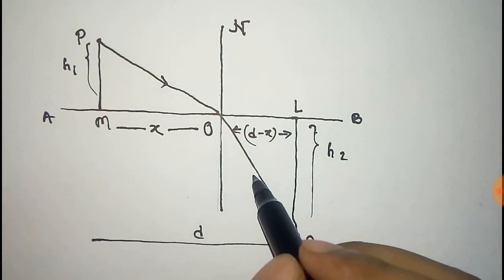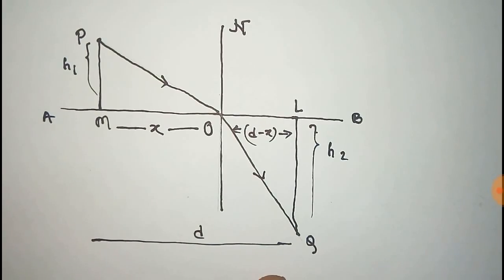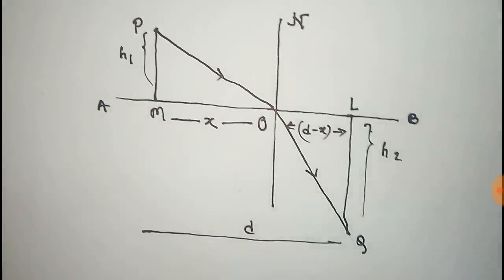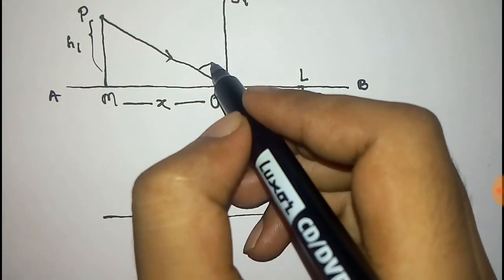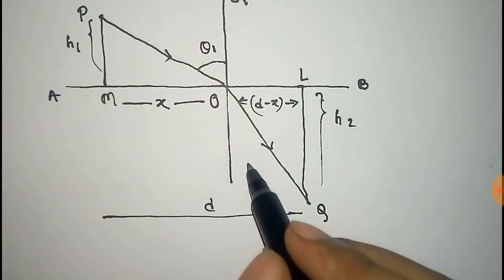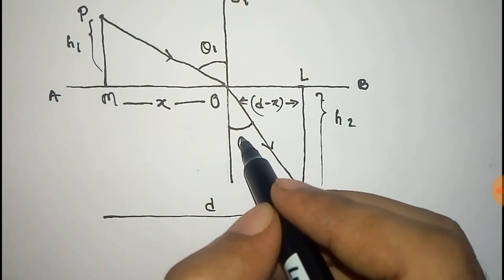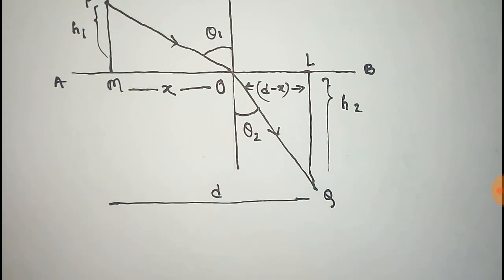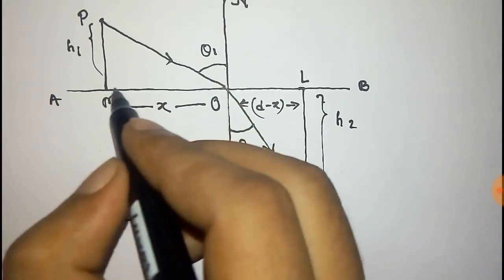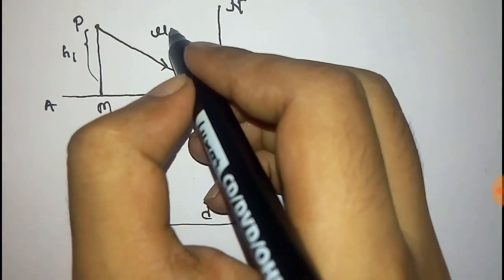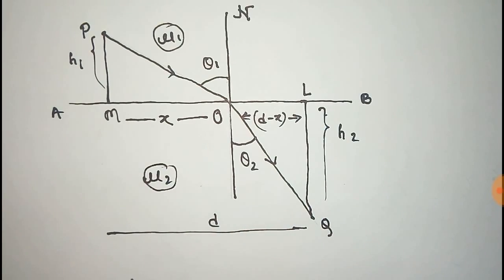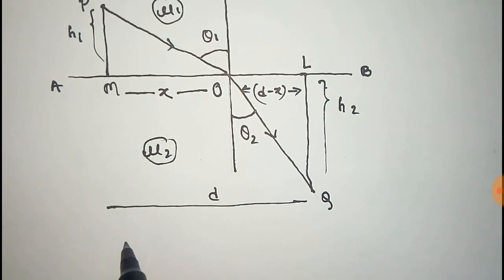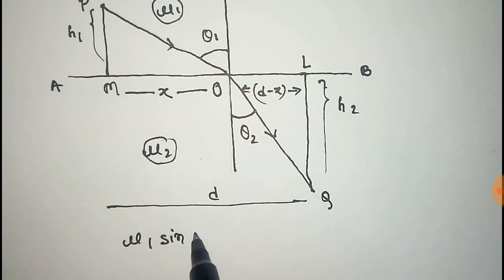Light coming from this goes in this direction. The incident ray makes angle theta1 with the normal and the refracting ray makes angle theta2 with the normal. So mu1 is the refractive index of the first medium and mu2 of the second. We have to prove Snell's law, that is mu1 sin theta1 is equal to mu2 sin theta2.